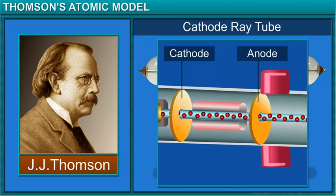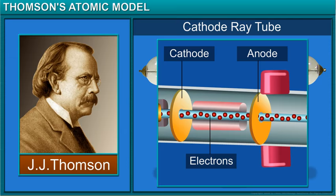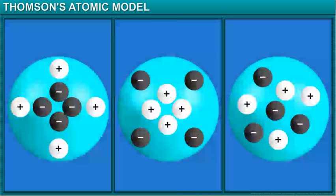Thomson concluded that the particles must be negatively charged and called these particles electrons. An electron has a negligible mass and has a charge of minus one.